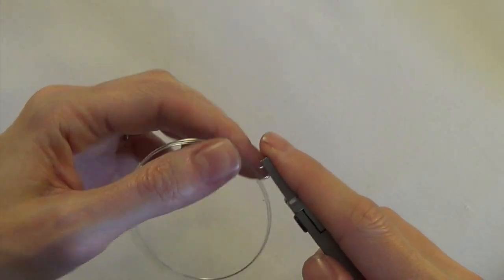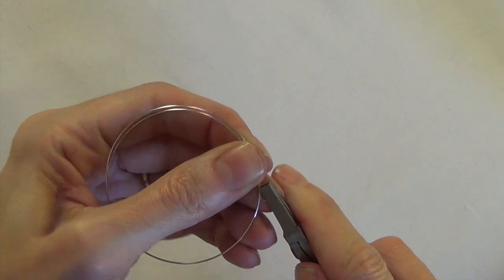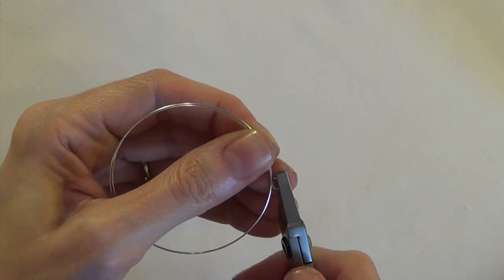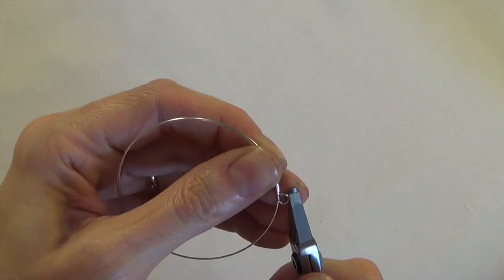You may need to come in with your flat nose or chain nose pliers and just close that loop up the rest of the way, and you can just do that by wiggling it front to back.